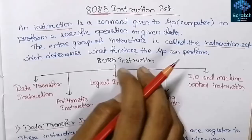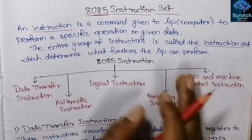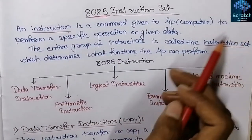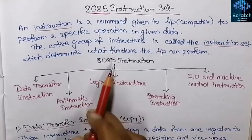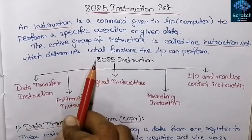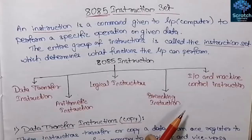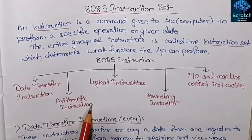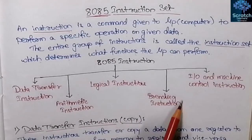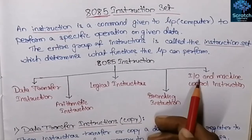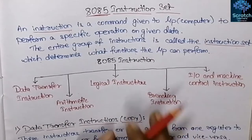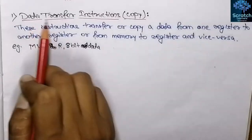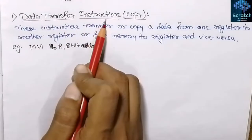The 8085 microprocessor has many types of instructions, and depending on some functionalities or key points, they are combined into different types. The 8085 instructions can be classified into five functional categories: data transfer instructions, arithmetic instructions, logical instructions, branching instructions, and I/O and machine control instructions. We will now discuss all five categories in detail.